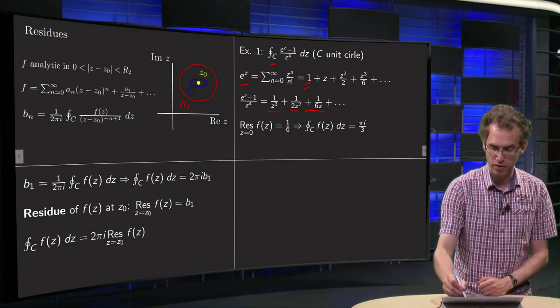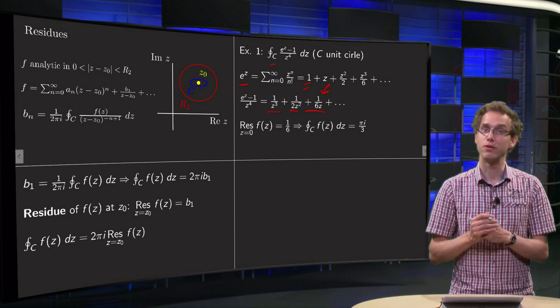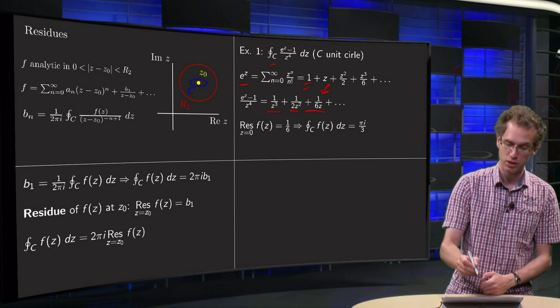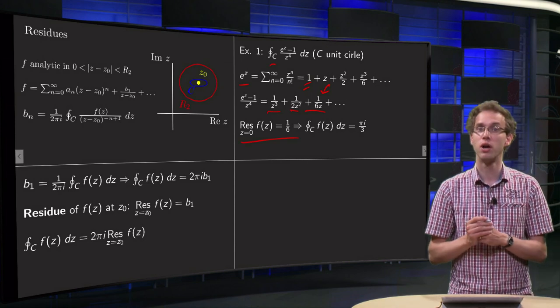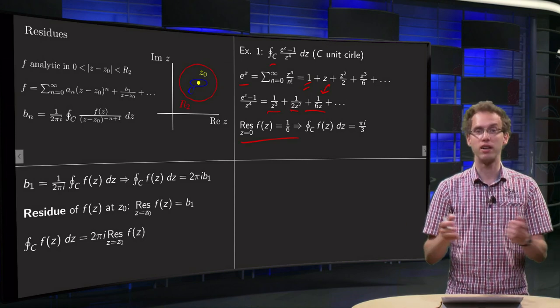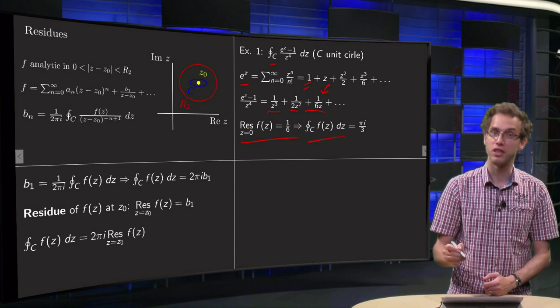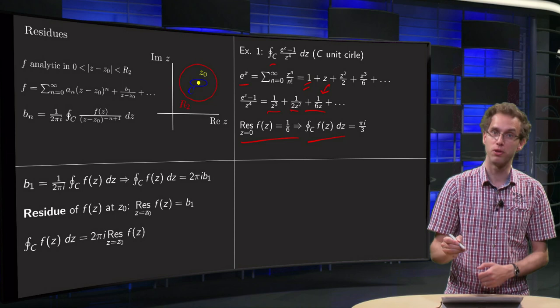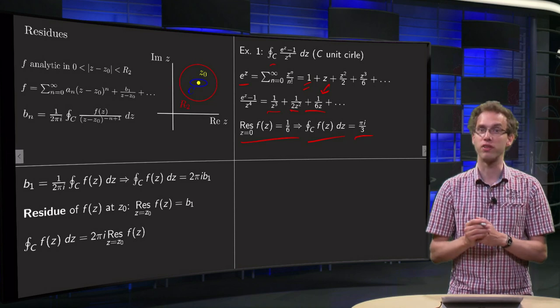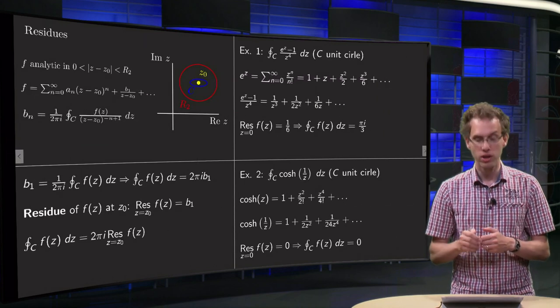Well, this coefficient of 1/z, you can see it over here, is 1/6, so the residue of f(z) at z equals 0 equals 1/6, and then we can write down immediately what our integral is: integral equals 2πi times the residue times 1/6 equals 2πi/6, or πi/3. So, let's do another example.